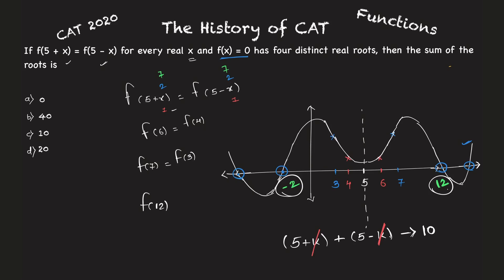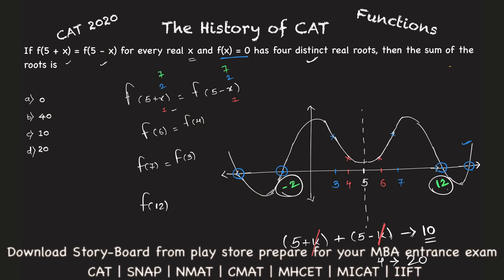So this root plus this root will be equal to 10, and the roots always come in pairs, which means sum of the four roots will be what? Two roots is 10, so four roots will be what? 20. And that is your answer, which is option number D.